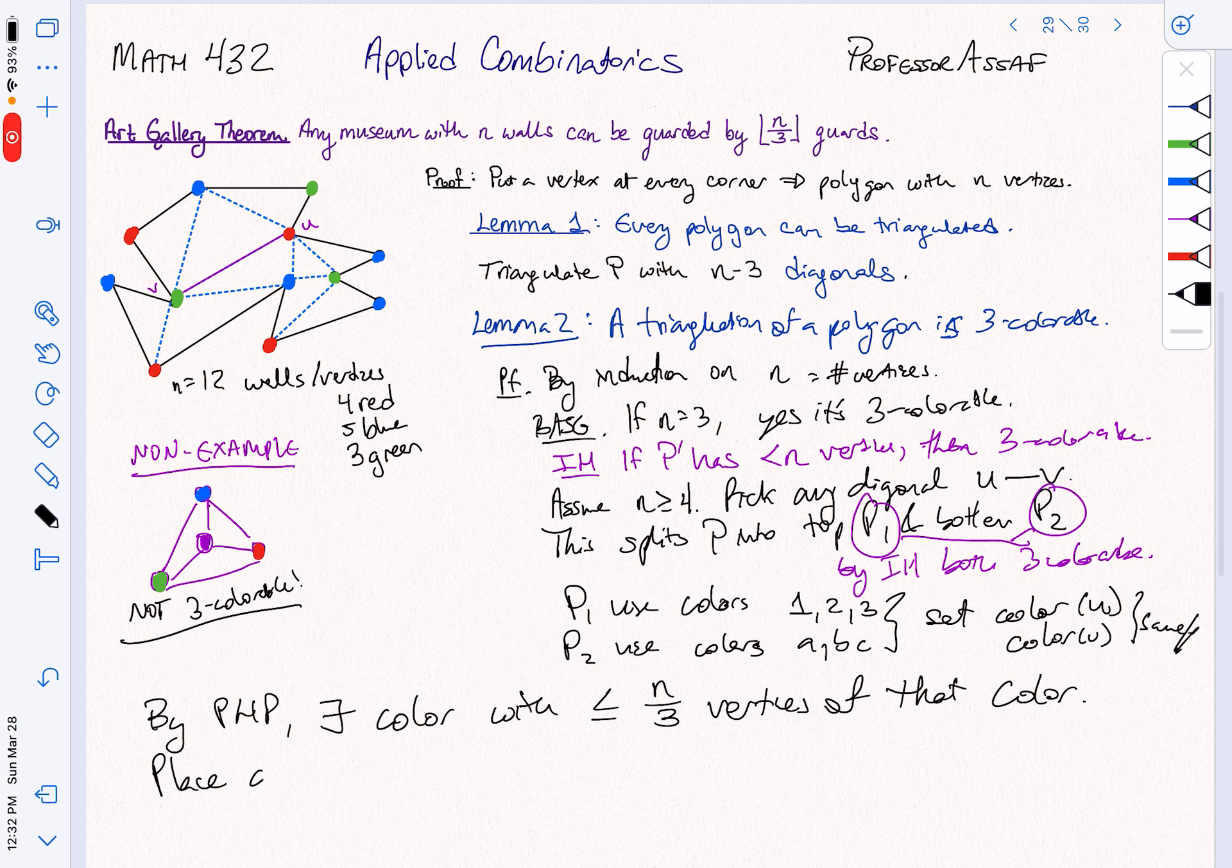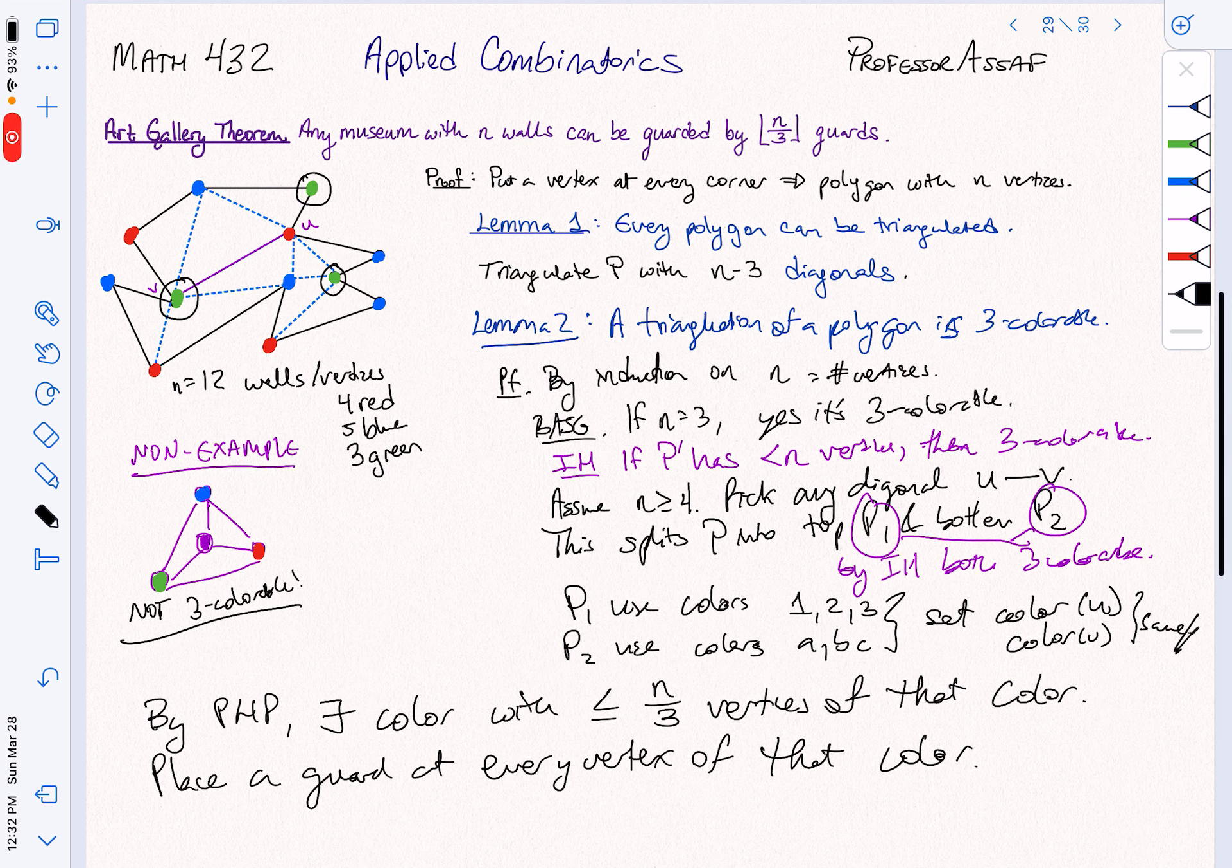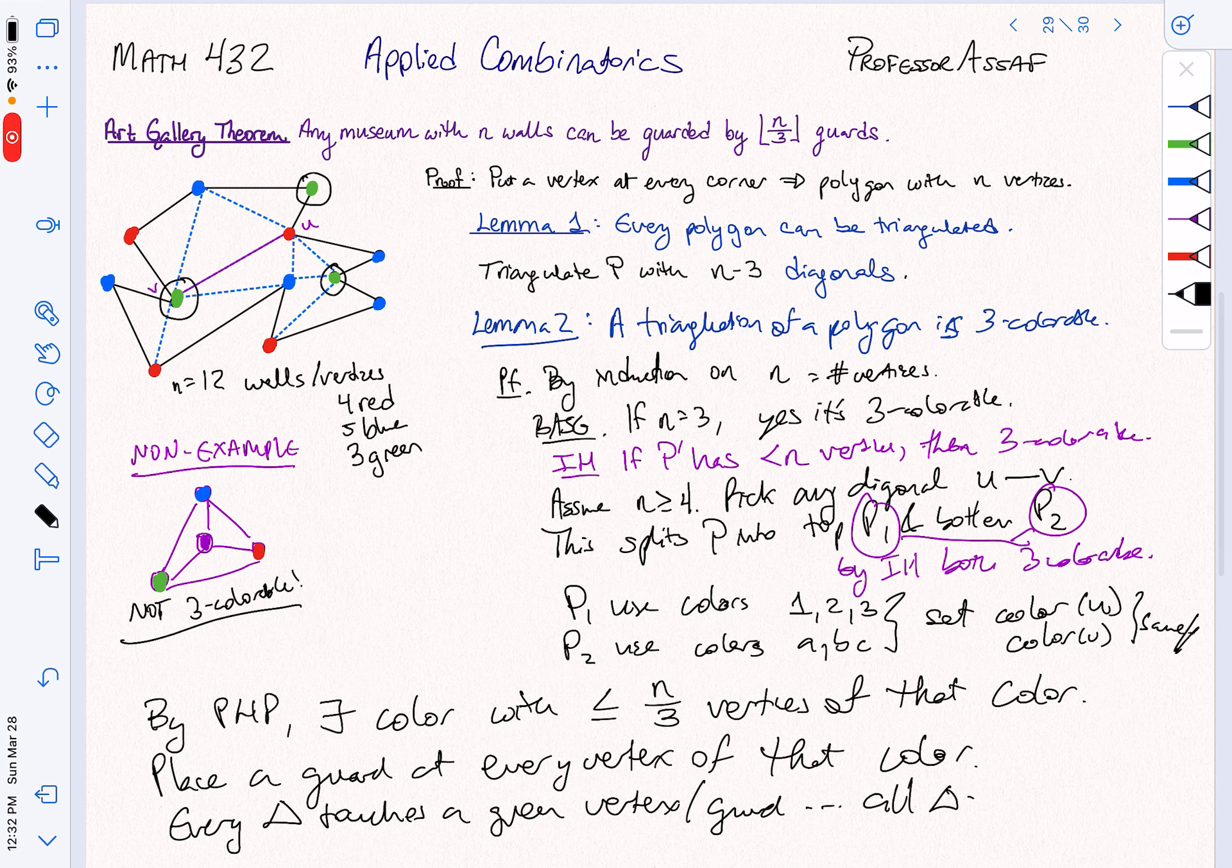Place a guard, place a guard at every vertex of that color. So my guards in this case, I could do it by saying my guards are going to be the green guys. I'm going to put a guard here, a guard here, and a guard here. And now every spot of my museum is visible to one of those guards because every triangle in my museum is adjacent to one of those green vertices. Every triangle touches a green vertex, which is a guard. That means that all triangles are guarded.